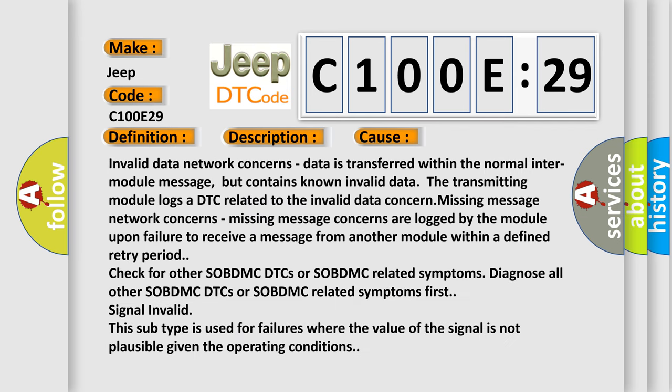Invalid data network concerns: data is transferred within the normal inter-module message, but contains known invalid data. The transmitting module logs a DTC related to the invalid data concern. Missing message network concerns are logged by the module upon failure to receive a message from another module within a defined retry period.